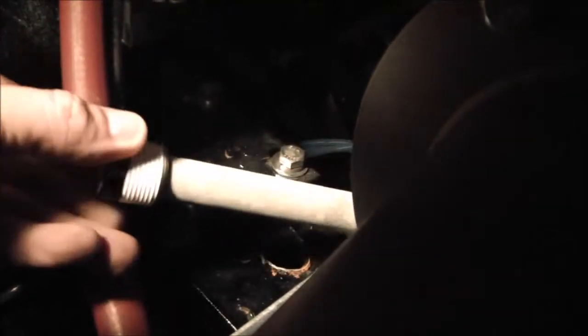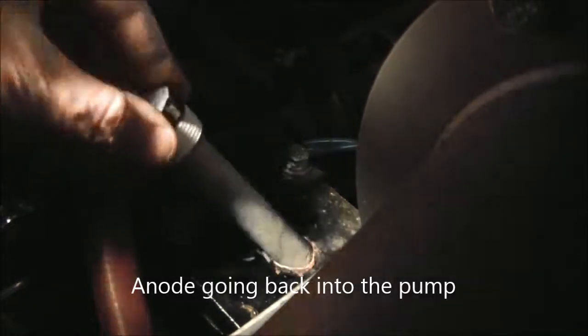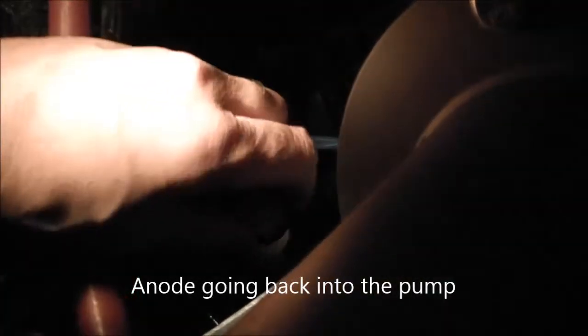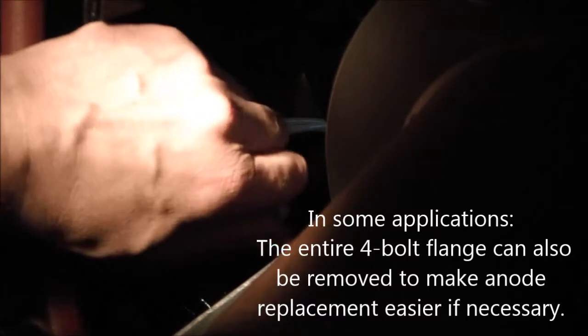All right I've recoded the anode as you can see here with thread tape. Now we can go ahead and reinstall it into that four bolt Darley discharge flange on the top of this discharge extension. We'll start to get the thread started here and then I'll finish up with my ratchet.